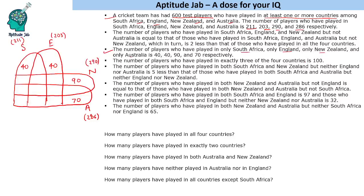Exactly 3 of the 4 countries is 100. These are people who played in 3 countries — for example, South Africa, England and New Zealand but not Australia; or New Zealand, Australia and England; or New Zealand, Australia and South Africa; or South Africa, England and Australia. The total of these four 3-country intersections adds up to 100.